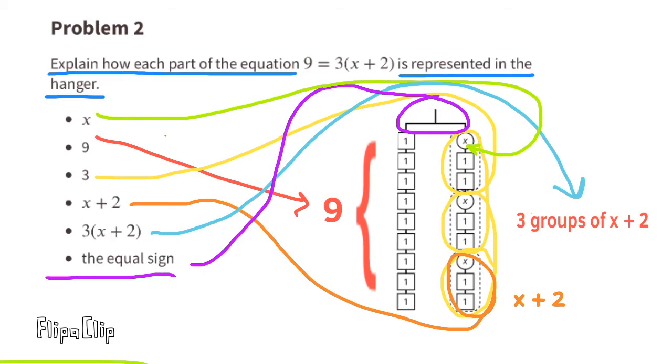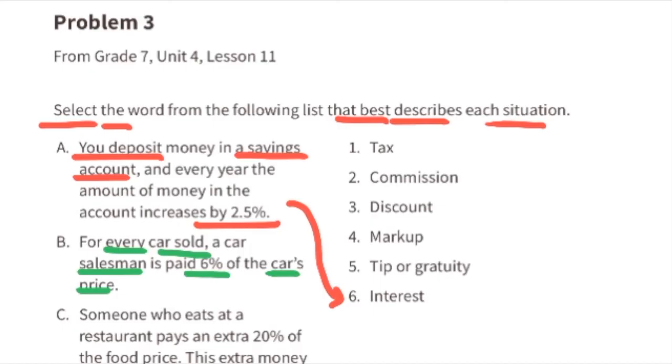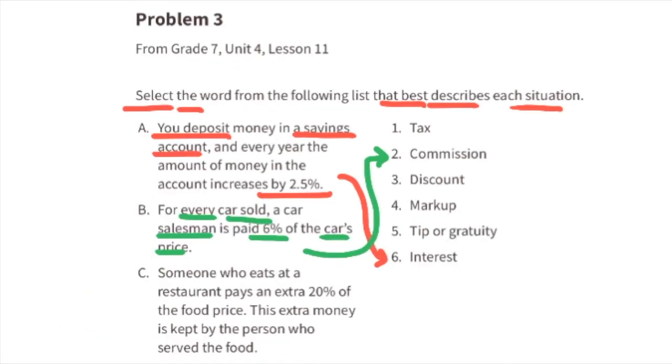Problem number three, from seventh grade Unit 4, Lesson 11: Select the word from the following list that best describes each situation. A: You deposit money in a savings account, and every year the amount of money in the account increases by 2.5 percent. This situation is describing the word interest. B: For every car sold, a car salesman is paid 6% of the car's price. This situation represents a commission. C: Someone who eats at a restaurant pays an extra 20% of the food price. This extra money is kept by the person who served the food. This situation represents a tip or a gratuity.